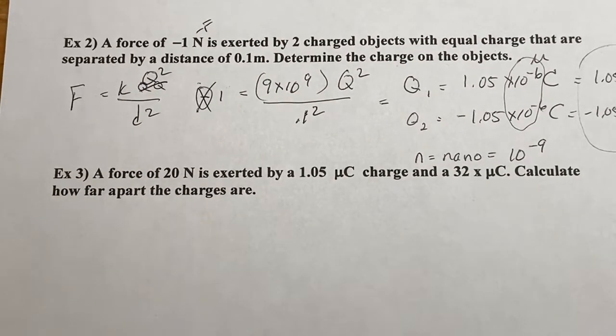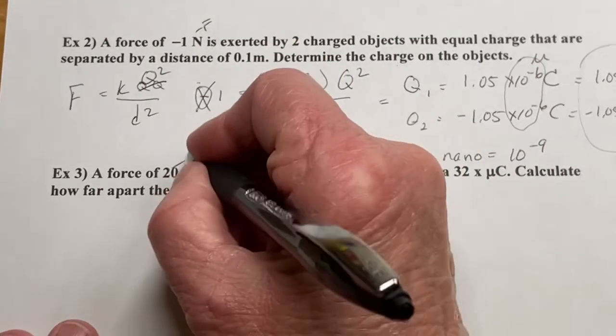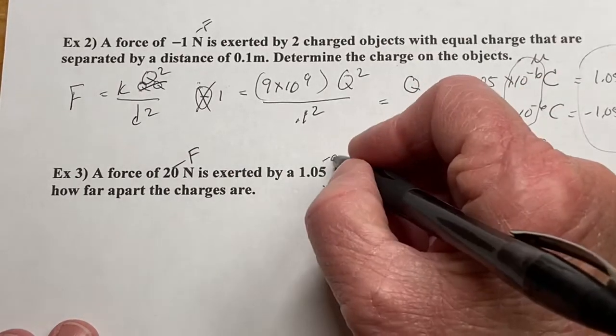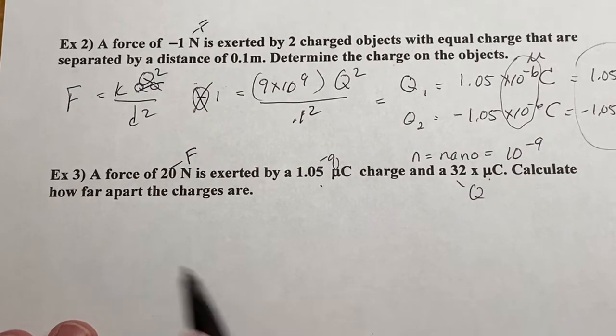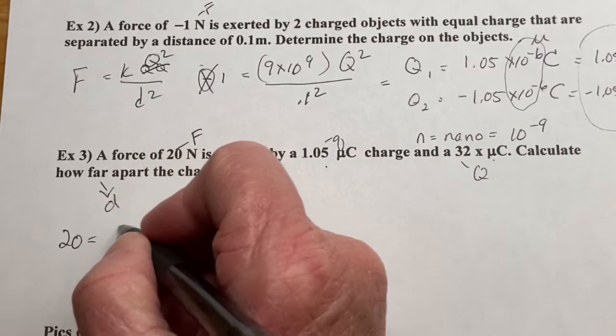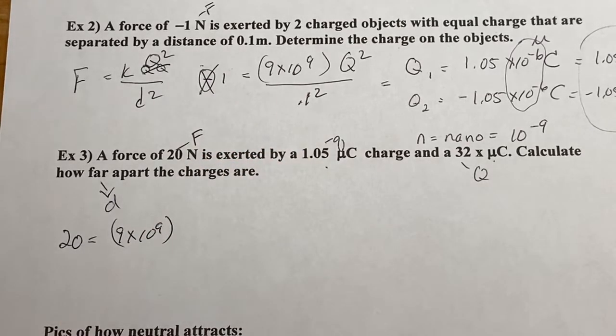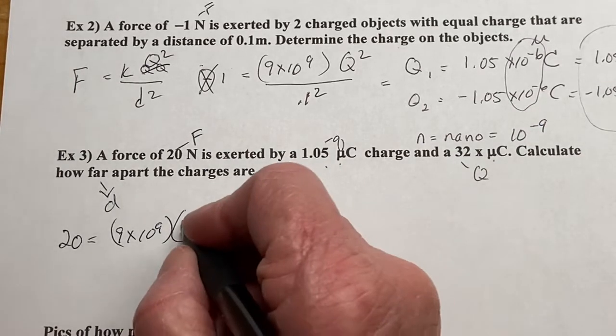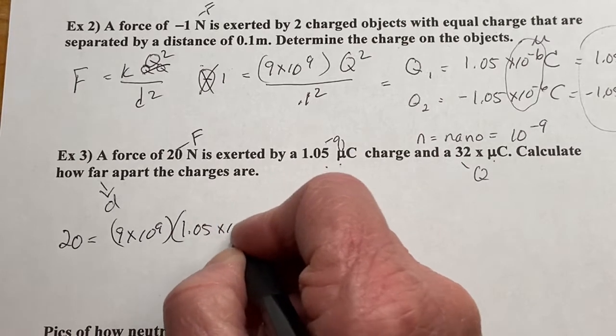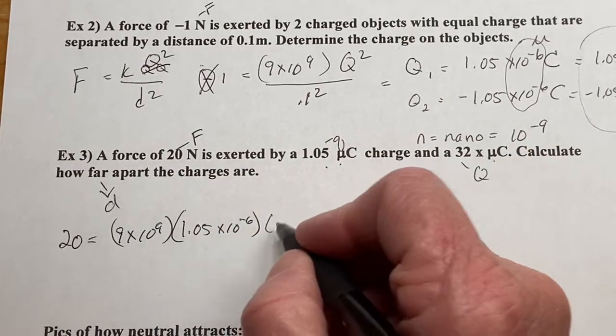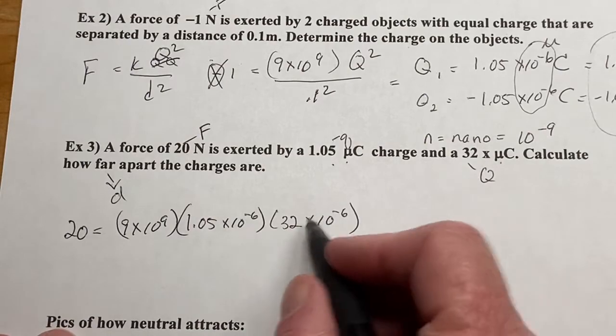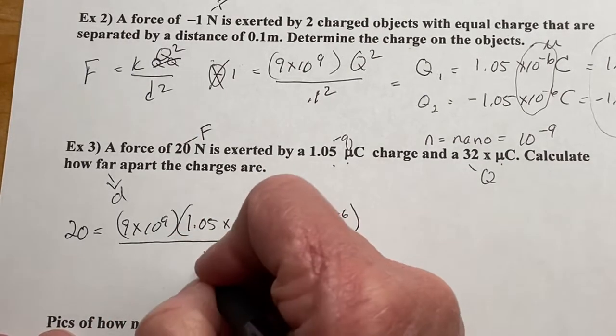Alright, let's go to example three. So I have a force of 20 newtons. So there's my force. Here's, oh, look at micro. So here's, we'll call this little Q because it's smaller. We'll call this capital Q. It doesn't really matter. Calculate how far. So I'm looking for the D. Alright, so I'm going to set this up. So it's going to be 20 equals 9 times 10 to the ninth. So you don't want to leave it like this. You're going to have to transfer it. Micro means negative 6. So this one's 1.05 times 10 to the negative 6. And this is 32 times 10 to the negative 6. Now I know that's improper, but it's not a final answer. So it's okay. You can put it as 3.2 times 10 to the negative 5th if you would like to fix it. D squared.